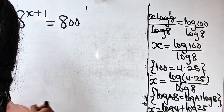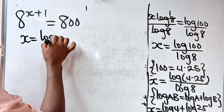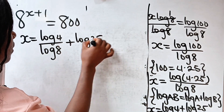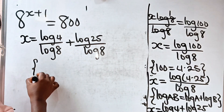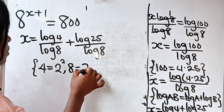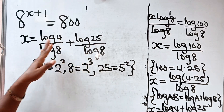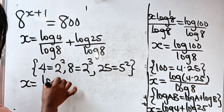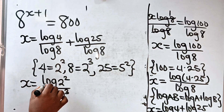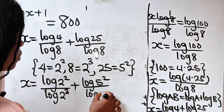Now we have x is equal to log 4 divided by log 8. Remember that 4 is the same thing as 2 squared, 8 is the same thing as 2 cubed, and 25 is the same thing as 5 squared. So we are going to replace these accordingly.